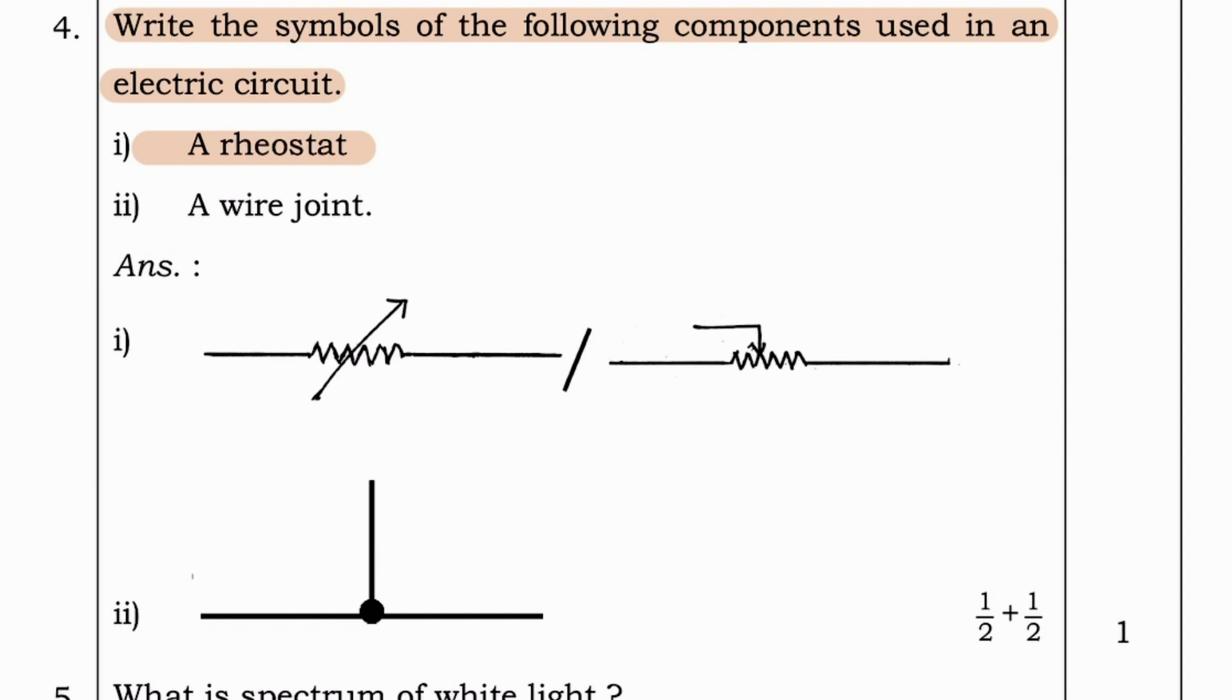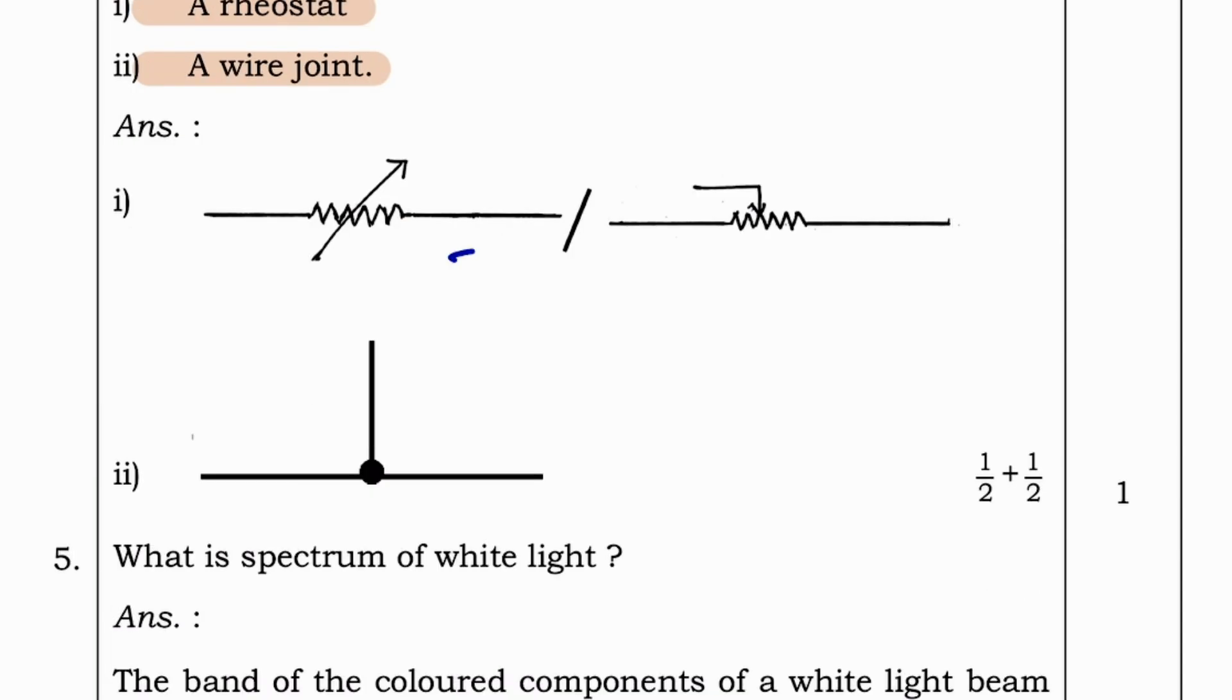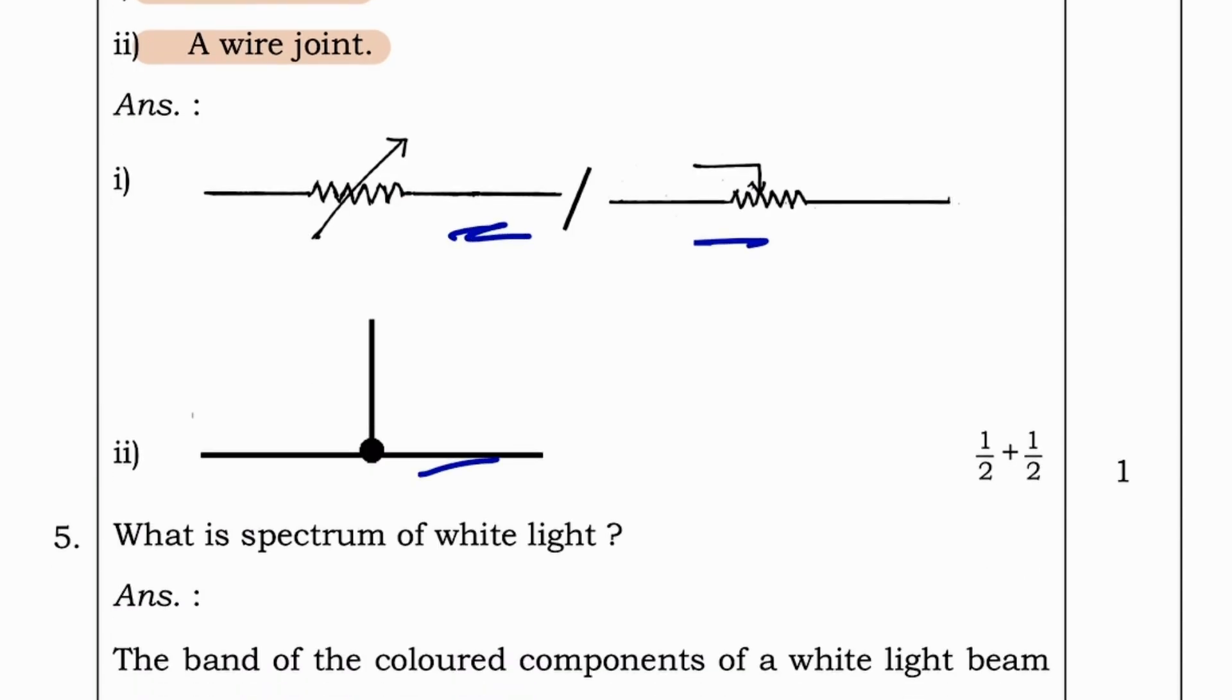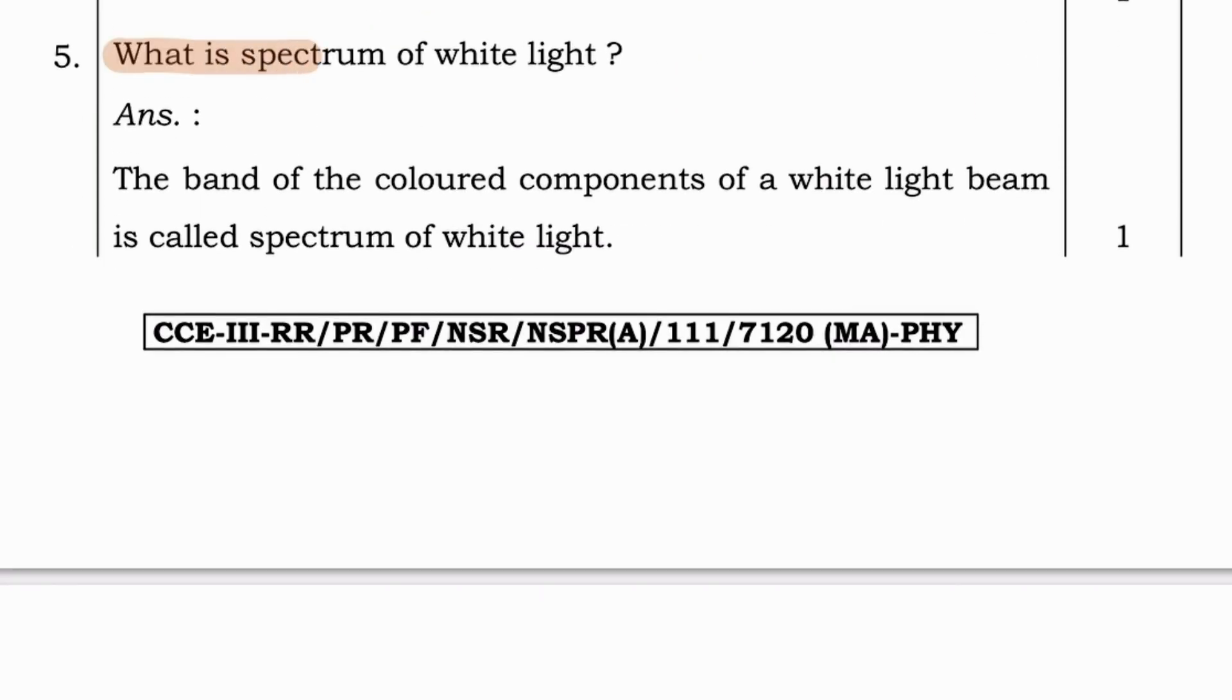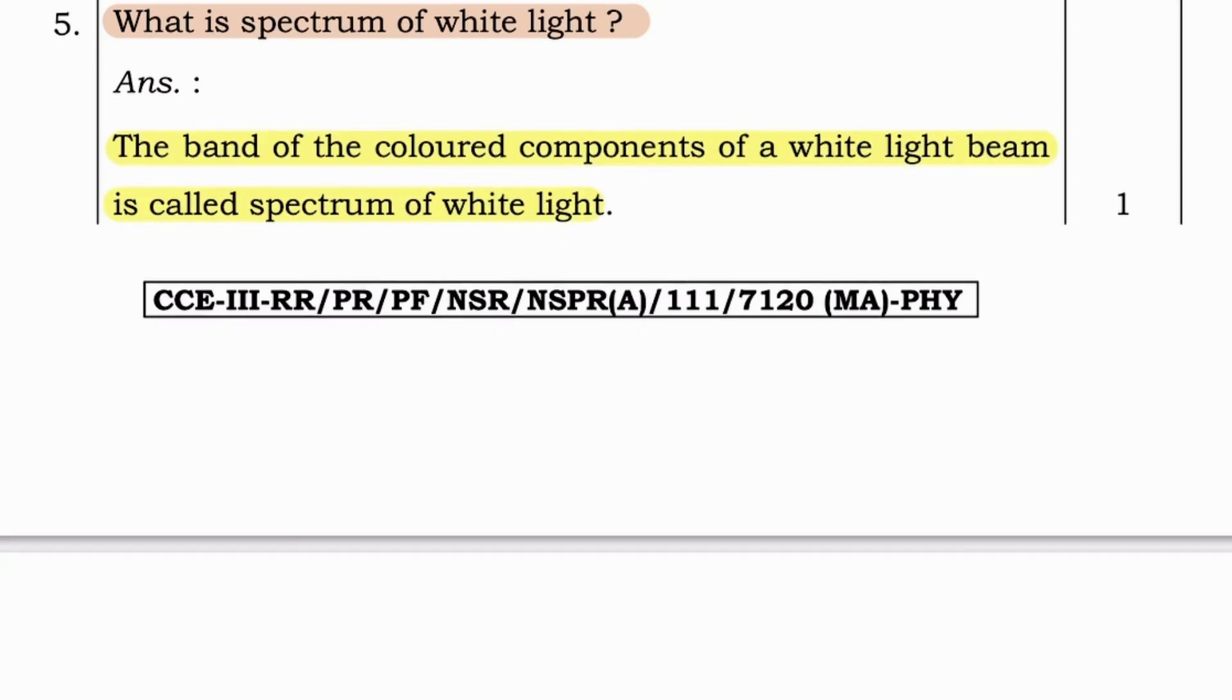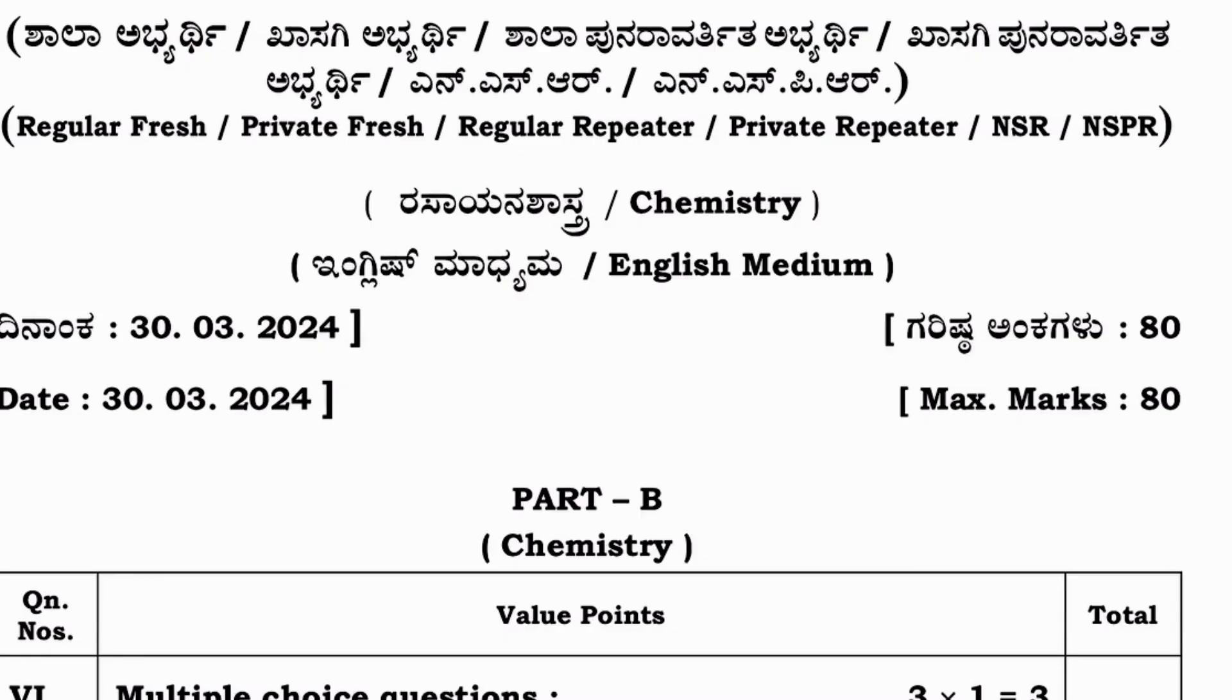Write the symbols of the following components used in an electric circuit. A rheostat and a wire joint. Here are the symbols given. Now let's go to next question. What is the spectrum of white light? Answer. The band of colored components of a white light beam is called a spectrum of white light.